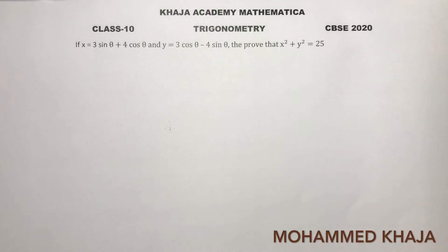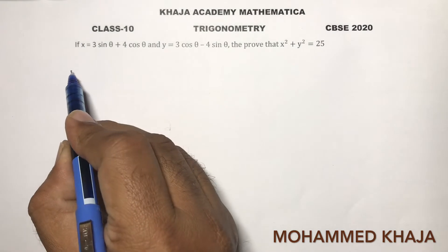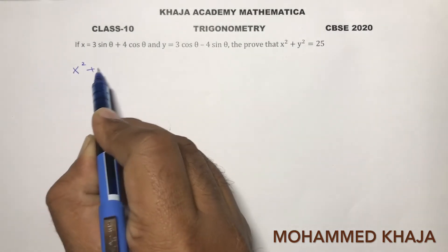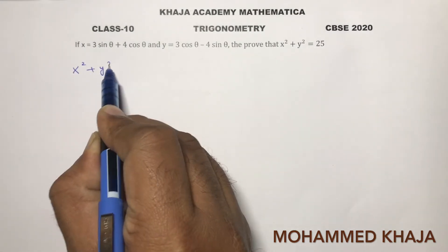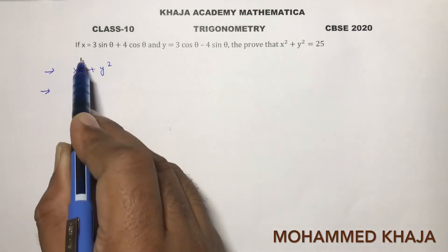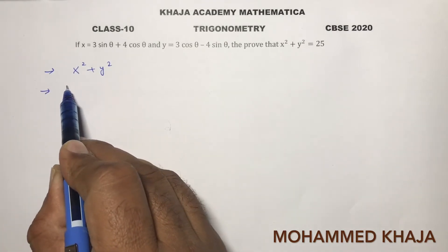If x equals 3 sin theta plus 4 cos theta and y equals 3 cos theta minus 4 sin theta, then prove that x squared plus y squared equals 25. So here I need to get x squared plus y squared equal to 25. Just substitute the value of x.